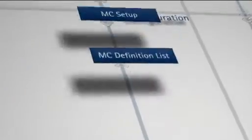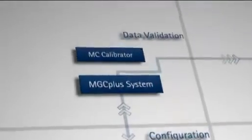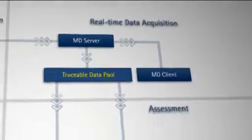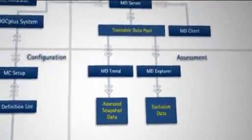Let's look at some of the key aspects of Catman Enterprise. The software comprises four main modules. These are configuration, data validation, real-time data acquisition, and the assessment of the acquired data.